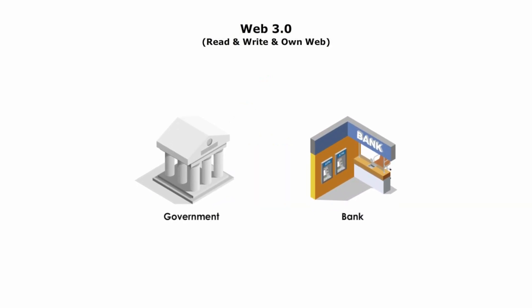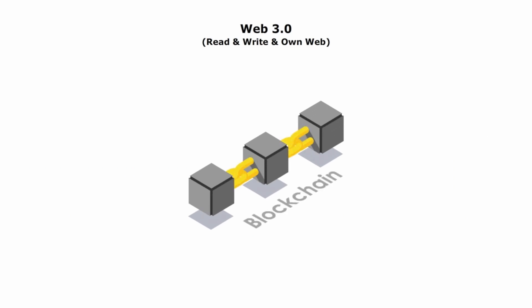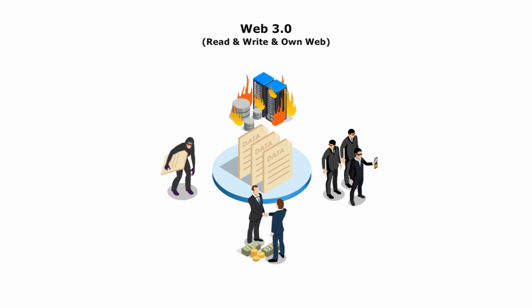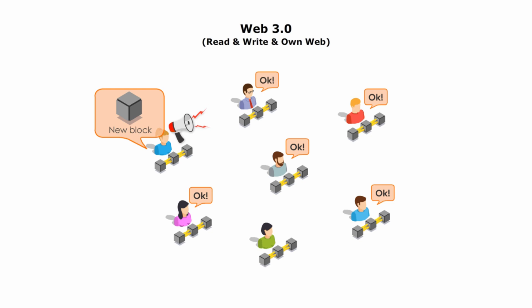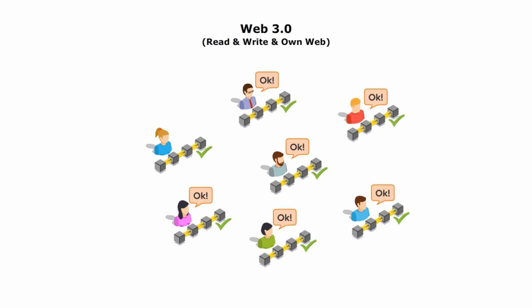Blockchain technology is a decentralized and distributed ledger system that records transactions across a network of computers. Each transaction is grouped into a block, linked chronologically to form a chain. Blockchain technology will bring Web 3.0 at least two benefits: (1) Decentralization — data is not stored on a single central server but on multiple computers across the network, making it resistant to central authority or control; and (2) Security — blockchain is used to secure data, making it extremely difficult for unauthorized parties to alter or tamper with transaction information.